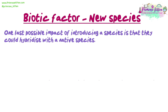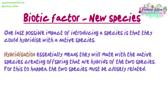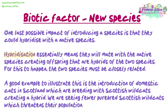One last possible impact of introducing a species is that they could hybridise with a native species. Hybridisation essentially means they mate with the native species, creating offspring that are hybrids of the two — for this to happen, the two species must be closely related. A good example is the introduction of domestic cats in Scotland, which are breeding with Scottish wildcats and creating hybrids. We are seeing fewer pure-breed Scottish wildcats, which threatens their population.